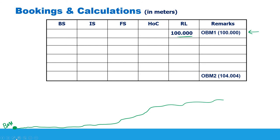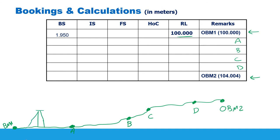The aim of this example is to calculate the reduced level of points A, B, C, D, and the last point — Ordnance Benchmark 2. So first you set up your level, then locate the leveling staff over the benchmark and take the back sight reading and record it in the table. In this case the back sight reading is 1.950.